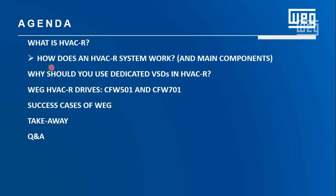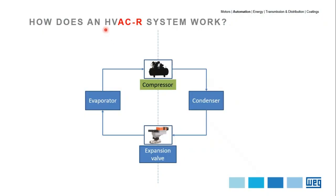Now let's go to the second topic: how does an HVAC system work and what are the main components? We will start with the ACR part — air conditioning and refrigeration. Any refrigeration or air conditioning system is comprised of at least four main components: the compressor, the expansion valve, the evaporator, and the condenser. The compressor and expansion valve work as a pair on opposite sides, and the same happens with the evaporator and condenser. There is a closed circuit between them. To explain this system, I will explain how one cycle of refrigeration works.